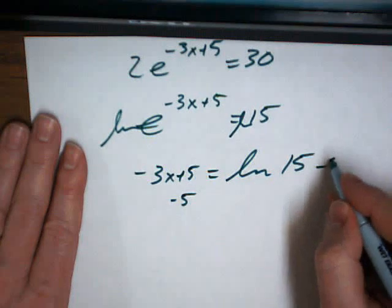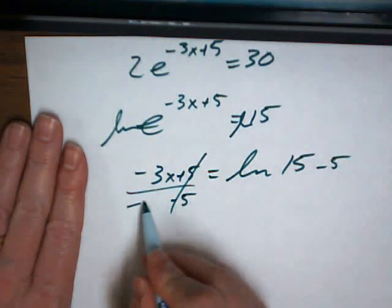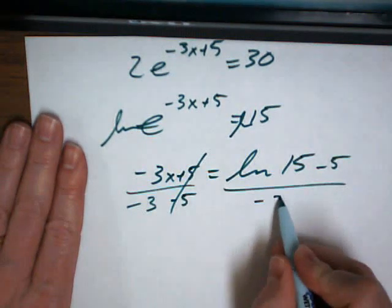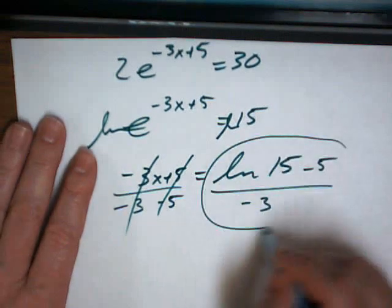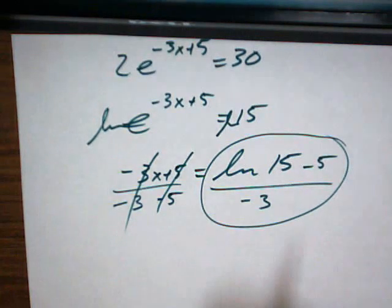Subtract off 5. Divide by negative 3. And if we plug that into the calculator, we should get the answer in the answer key. I'll let you try to find that. See you next time.